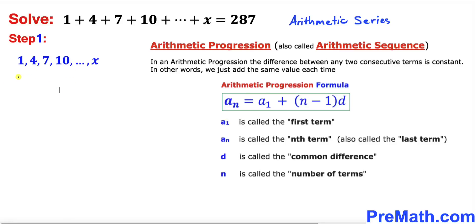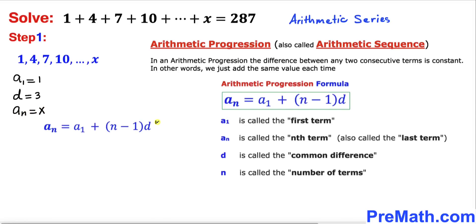So we have: a sub 1 equals 1, common difference d equals 3, and a sub n equals x. Using the arithmetic sequence formula and filling in the values, x equals 1 plus n minus 1 times 3.